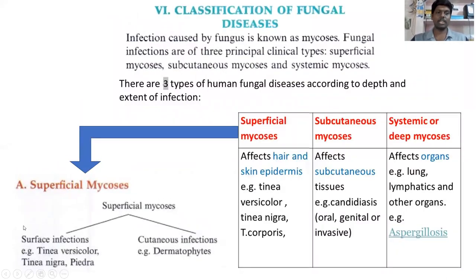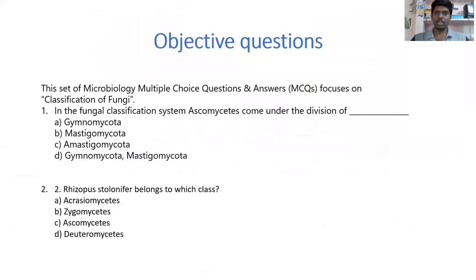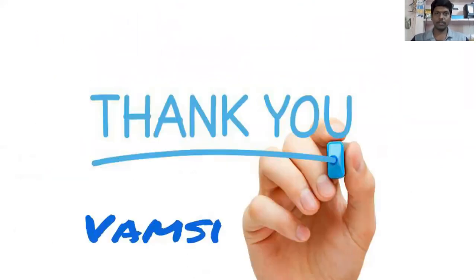In the next lecture we will discuss in detail each fungal infection, starting with superficial mycosis — specifically tinea versicolor and tinea nigra. Thank you students, thank you very much.